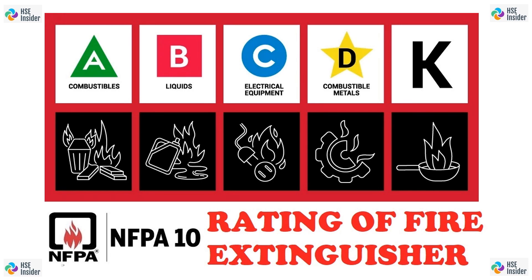Class A fires are those that involve ordinary combustible materials such as wood, cloth, paper, rubber, and many plastics. When you see a fire extinguisher with a Class A rating, you know it can safely put out a fire made of ordinary combustibles.